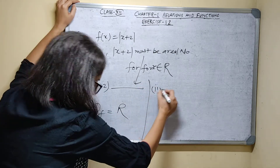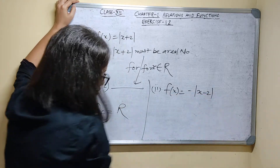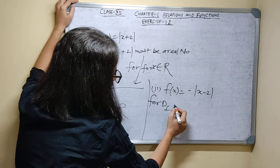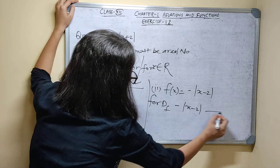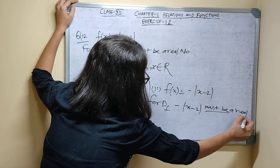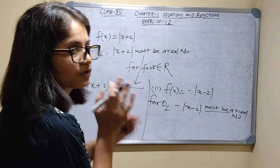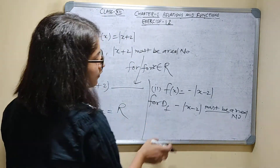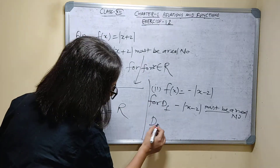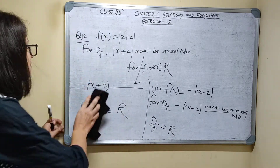Second part: f(x) is equal to minus mod of x minus 2. For domain of a function, minus mod of x minus 2 must be a real number. Any value of x which belongs to the real numbers — this minus mod of x minus 2 will be a real number. So again here domain of function is all real numbers.